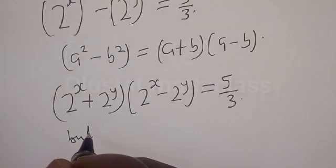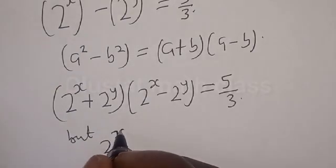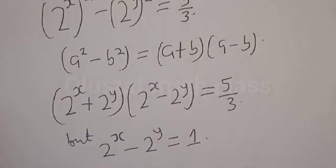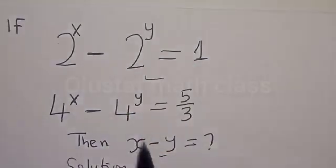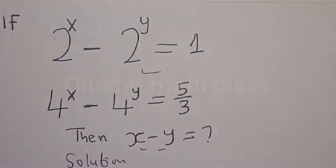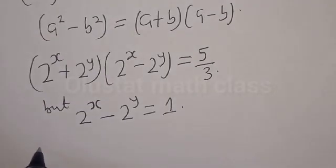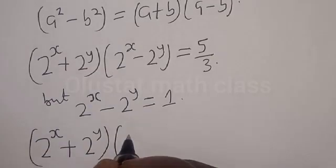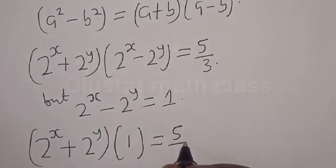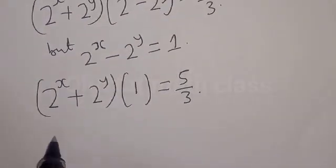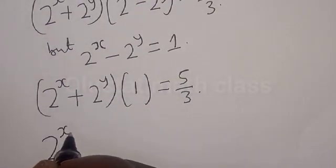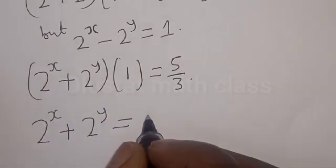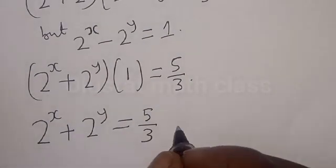But 2 raised to power x minus 2 raised to power y is equal to 1 from the original equation. Substituting that in, we get (2 raised to power x plus 2 raised to power y) multiplied by 1 equals 5 divided by 3. Therefore, 2 raised to power x plus 2 raised to power y equals 5 divided by 3. Let's call this equation 1.